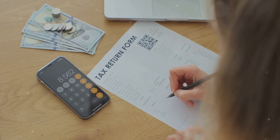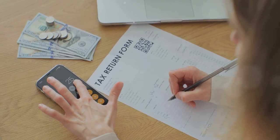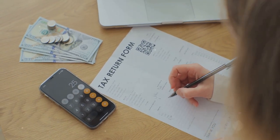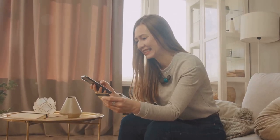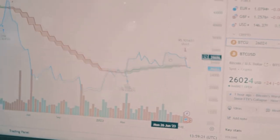...comes in. Coin Ledger imports your transaction history from exchanges, calculates your gains and losses, and fills out Form 8949 for you. It's like having a tax expert in your pocket.